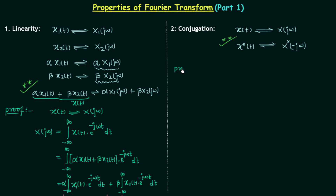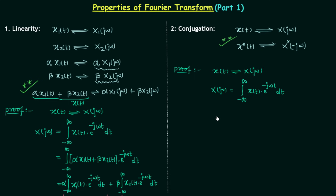The proof is very easy to understand. We already know x(t) is a time domain signal and its Fourier transform is X(jω), which is equal to the integration from minus infinity to infinity of x(t) e to the power minus jωt dt. Now we will perform the conjugation on both sides. On the left hand side we will have X*(jω), and on the right hand side we will have the integration from minus infinity to infinity of x*(t) multiplied by e to the power plus jωt dt.